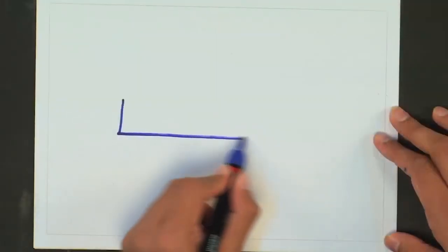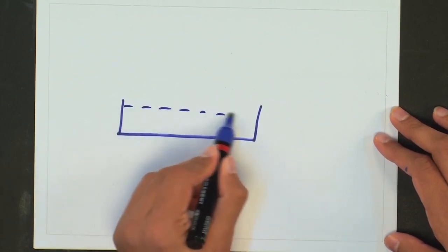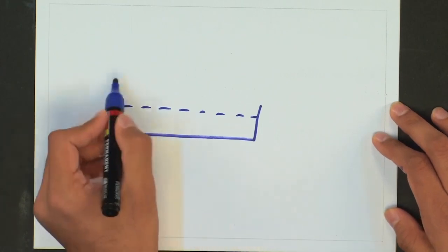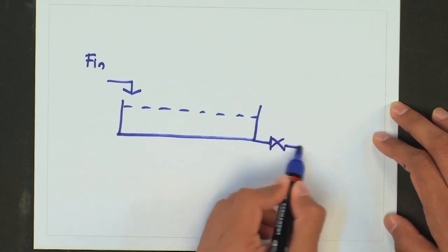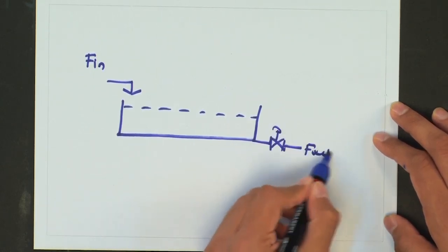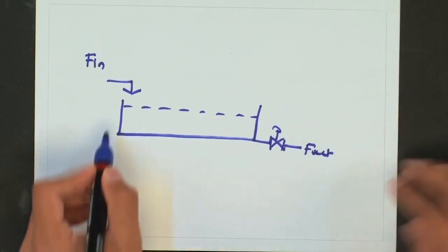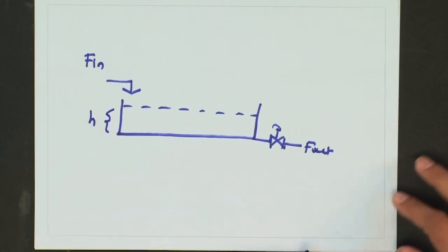As it turns out there is a fourth way, which is not actually a control strategy but a design strategy by which you can maintain the height inside this tank. What you can do is, when selecting a tank, you select a tank which has a much bigger cross-sectional area, so that even if there is a 5 percent change in inlet flow rate, the change in the height is very small.